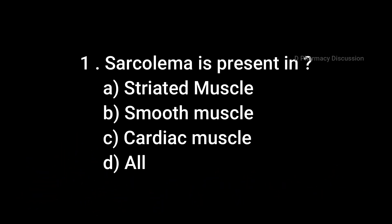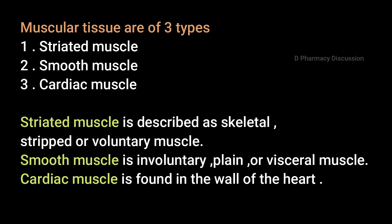First question: Sarcolemma is present in — Option A: Striated Muscle, B: Smooth Muscle, C: Cardiac Muscle, Option D: All. Correct answer is Option A: Striated Muscle. Muscular tissues are of three types: Striated Muscle, Smooth Muscle, and Cardiac Muscle.